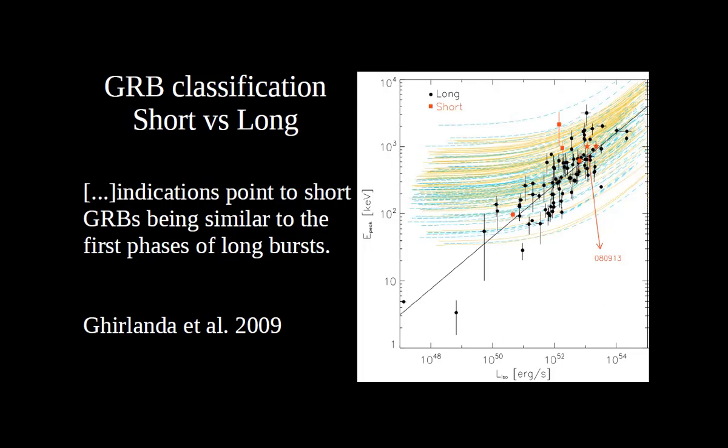A 2009 study quoted that 'indications point to short GRBs being similar to the first phases of long bursts.' Observers confirmed: when they first see a GRB, it can be either class — same features in the beginning. If it stops before two seconds it is short; if it continues with extended emission it is long. No spectral, energy, or luminosity differences distinguish them initially.